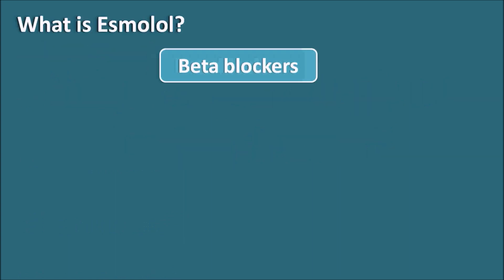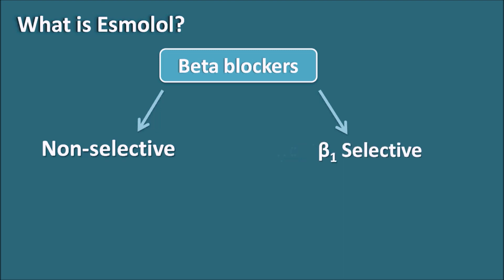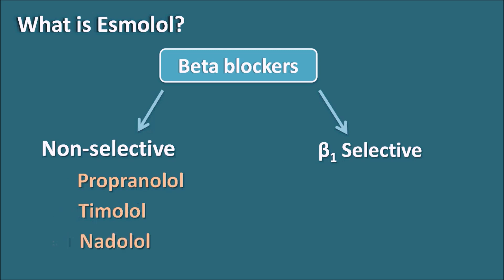What is esmolol? Esmolol is a beta blocker, and beta blockers can be classified as non-selective beta blockers as well as selective beta blockers. These selective beta blockers are selective for the beta-1 receptors. Non-selective beta blockers include propranolol, timolol, nadolol, and pindolol. Among the beta-1 selective blockers, esmolol is one of the drugs.